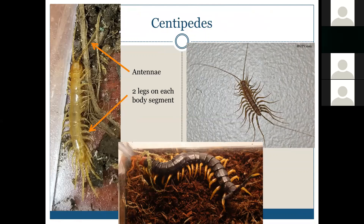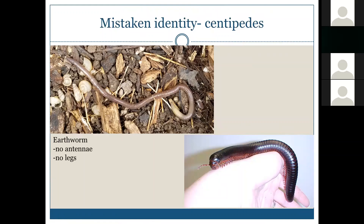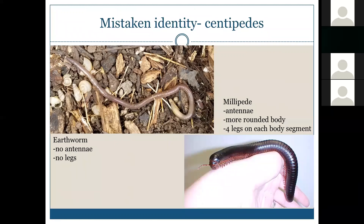To summarize centipedes: they have antennae, a long worm-like body, and two legs on each body segment. Mistaken identity includes earthworms — which have no antennae and no legs — and millipedes, which have antennae but a more rounded body with four legs per segment. And please do not panic about the millipede on my hand in that picture — that is a giant African millipede. We don't have millipedes that get that big in the United States.